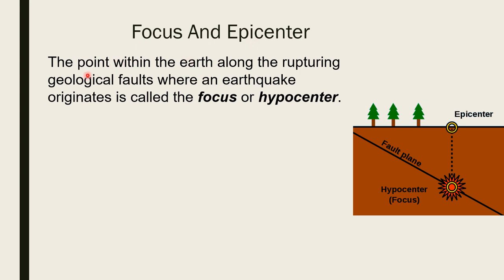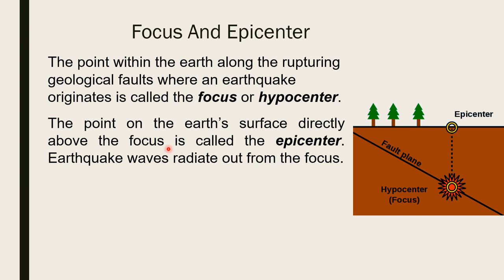The point within the earth along the rupturing geological faults where an earthquake originates is called the focus or hypocenter. The same point on the earth's surface directly above the focus is called the epicenter. Earthquake waves radiate out from the focus in each direction.